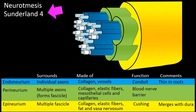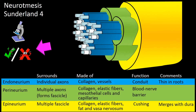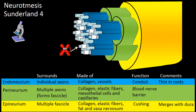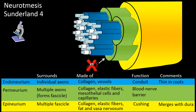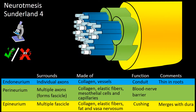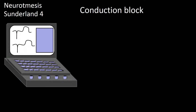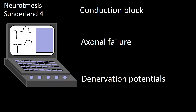Neurotmesis consistent with Sunderland type 4 involves most nerve elements — axon, myelin, endoneurium, and perineurium — but the epineurium is spared. This light microscopy pattern is accompanied by electrodiagnostic findings consisting of conduction block early on, quickly followed by axonal failure and denervation potentials.